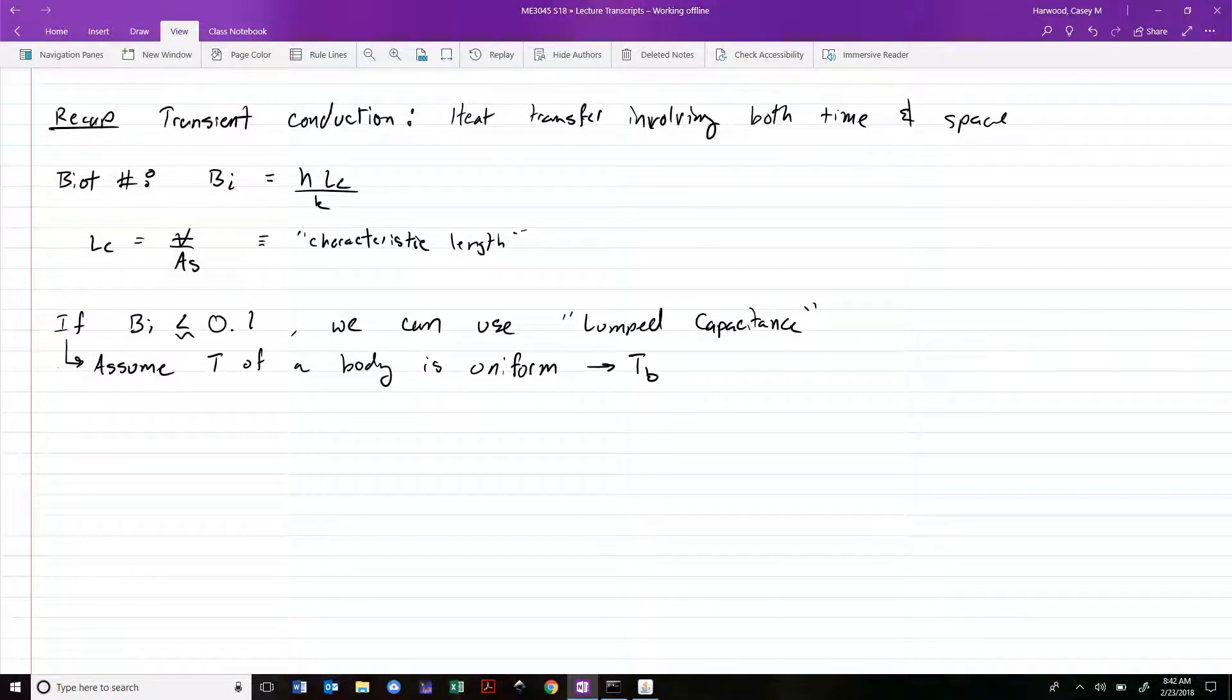We went about solving this by establishing that we can't use the heat equation because we've gotten rid of the temperature gradient that drives Fourier's law. So we went back a step and said first law, conservation of energy, energy balance. We write E dot stored equals E dot in minus E dot out plus E dot G.